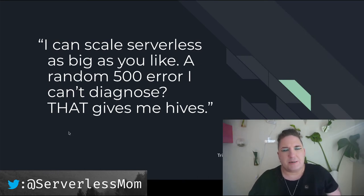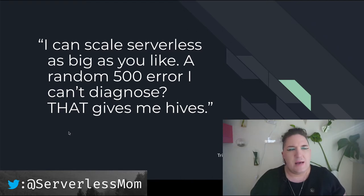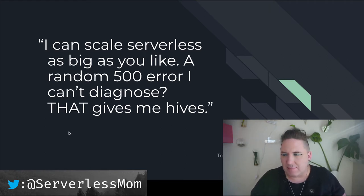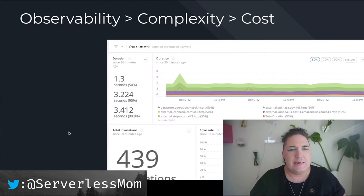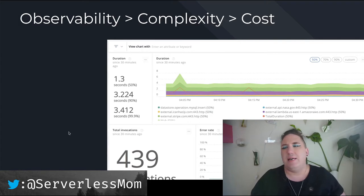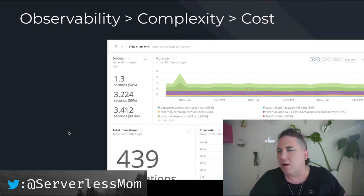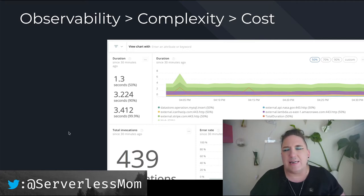There's a quote from serverless developer Patrick Steger that really stuck with me: 'I can scale serverless as big as you like. A random 500 error that I can't diagnose — that's what gives me hives.' This speaks to a theme I see when talking to people doing more advanced, complex stacks — often with very high availability. Observability comes up as a much bigger problem way earlier in the process than they expect, often before they even face complexity or cost issues. The big question becomes: we can stand up these big complex applications really quickly, but getting insight into what's actually going on can be hard.